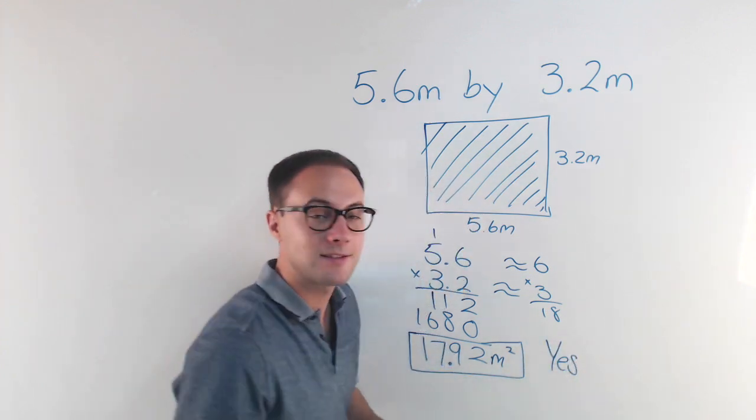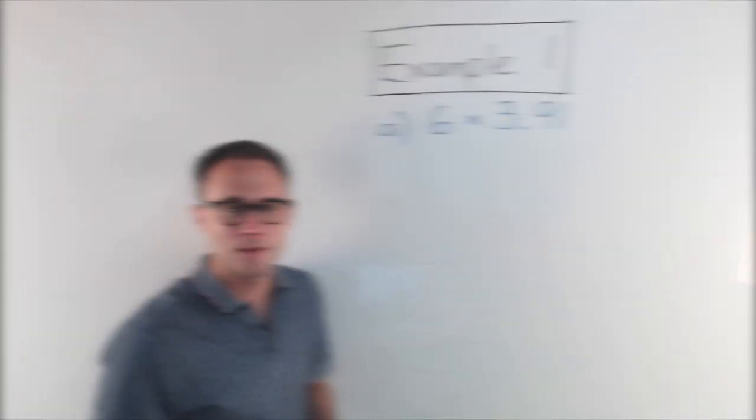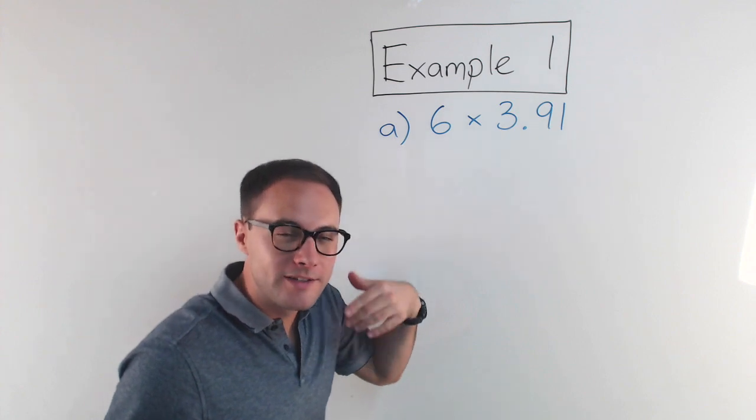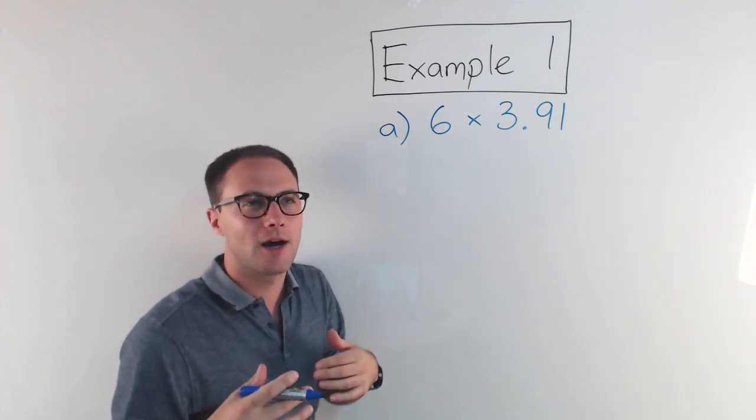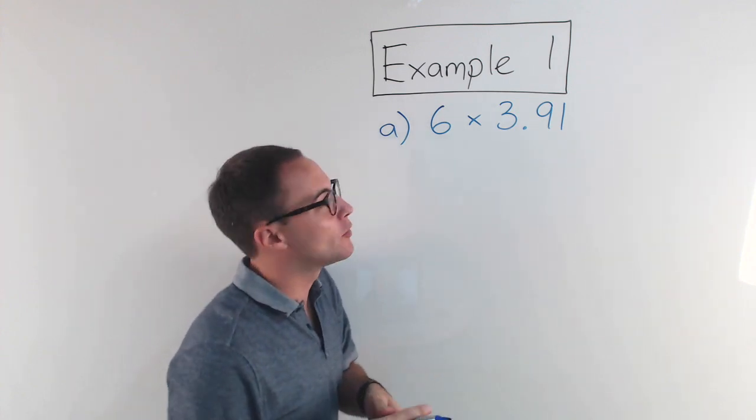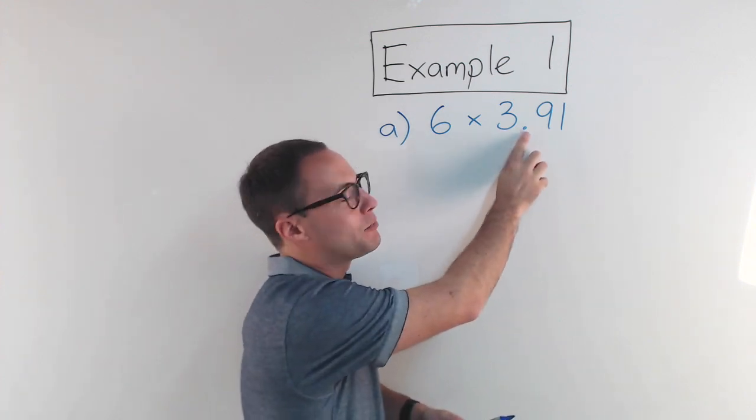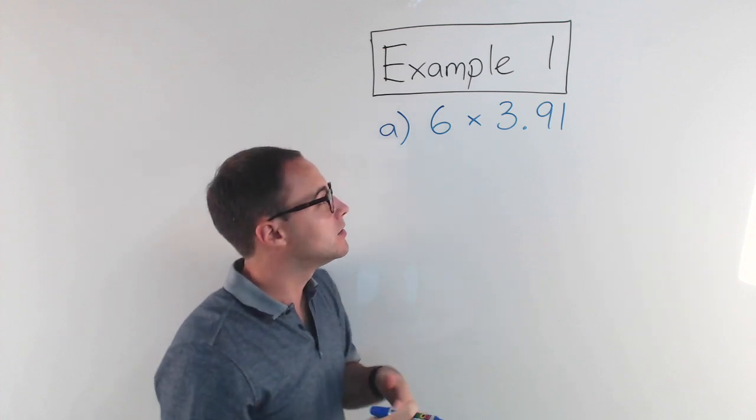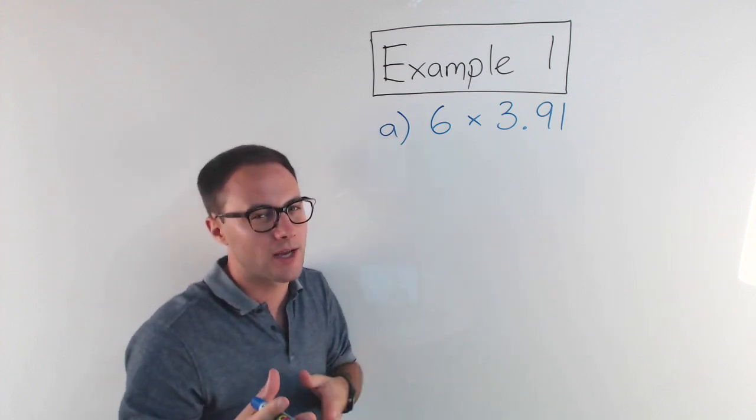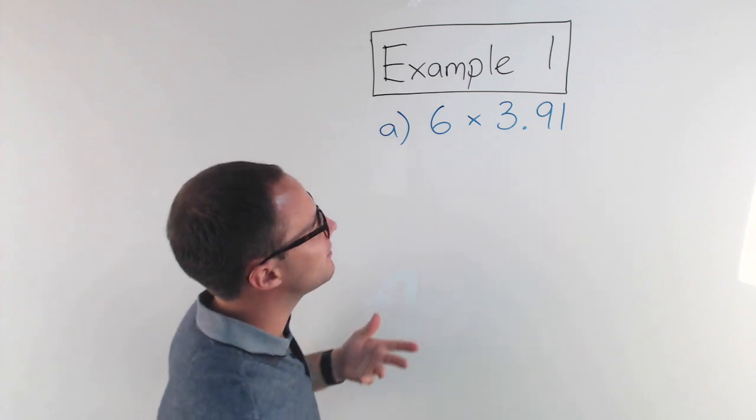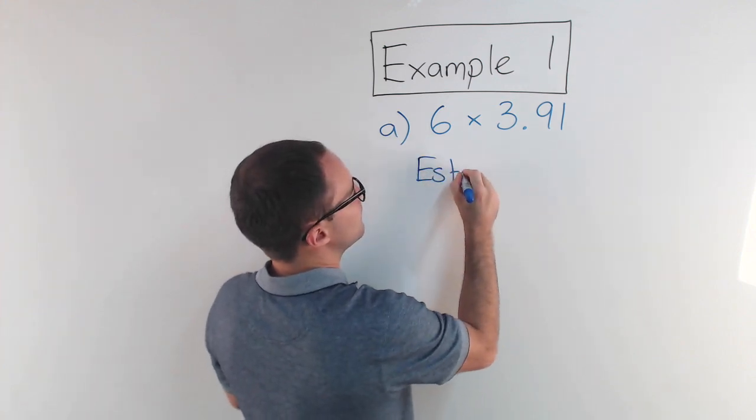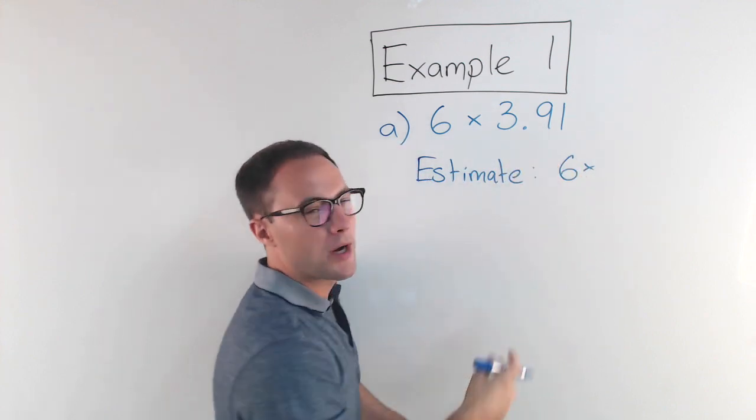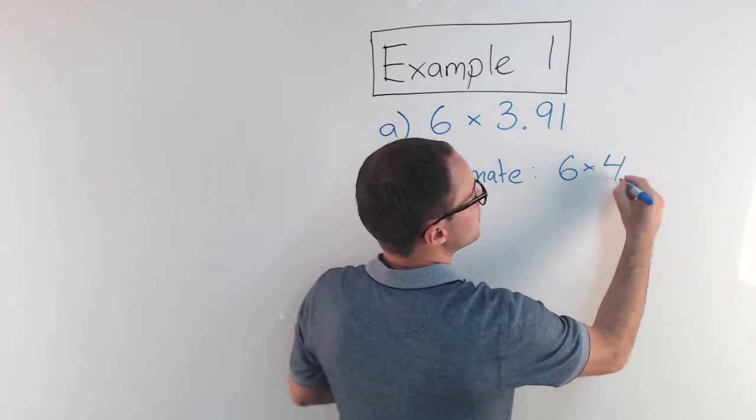Okay, so let's try another example. All right, here's example one: 6 times 3.91. Now when you're dealing with decimals, it's always a good idea to estimate, and the reason is because it can be very easy to put the decimal point in the wrong spot, which completely changes your answer. So if you estimate, that will help kind of catch those errors. So if we're going to estimate this, the six is okay, 3.91 we can just round up to four, so we're thinking our product should be around 24.